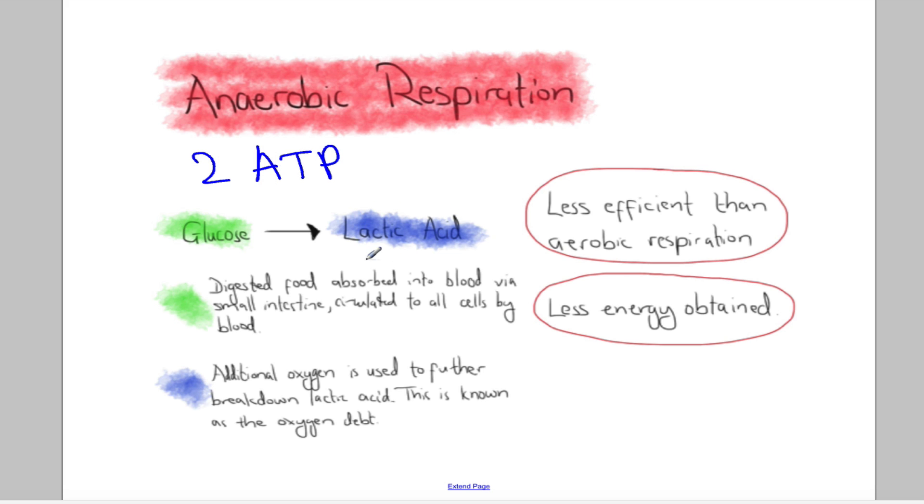This lactic acid, this product of anaerobic respiration, is actually harmful to the body and must be removed and broken down as quickly as possible. The way we do that is to oxidize it into carbon dioxide plus water. This is why after you've finished exercising, you continue to breathe deeply and more rapidly, because you're taking in extra oxygen, and that extra oxygen is used to break down lactic acid. Because we're taking in that extra oxygen, we call that the oxygen debt. You've got to pay back what you've borrowed in order to keep exercising even when there wasn't enough oxygen around.